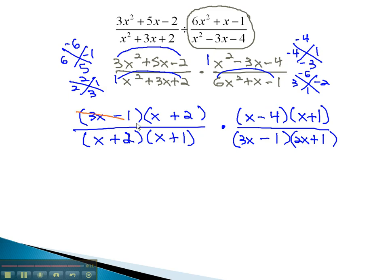And now we can divide out our common factors of 3x minus 1, x plus 2, x plus 1, to get our final answer of x minus 4 over 2x plus 1.